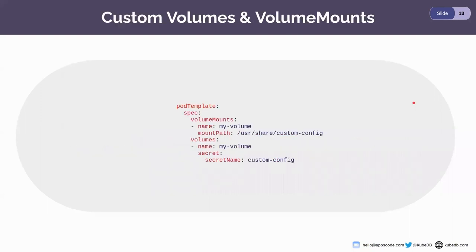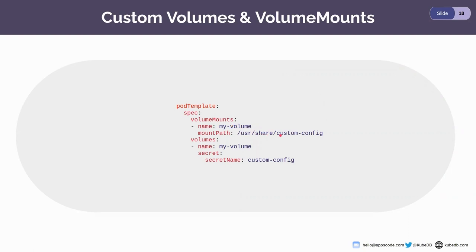Another global change is support for custom volumes and volume mounts. We have received various requests from customers needing to mount a file or config map to the DB container for custom configuration. From now on, you can mount your own volume in the DB container for all databases, providing users more flexibility.